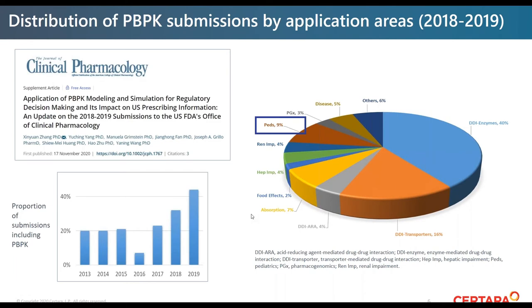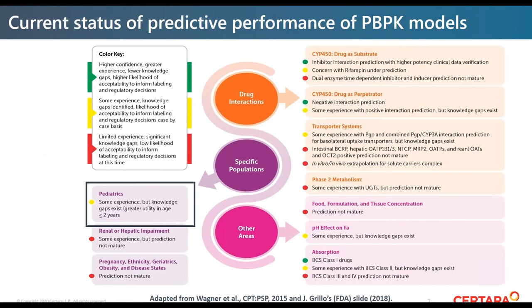Moving on to PBPK submissions specifically, a publication in the Journal of Clinical Pharmacology from the end of last year shows that the number of submissions including PBPK is increasing significantly every year. DDIs remain the focus for the majority, but pediatrics covers about 9% of PBPK cases. Because of the increasing total number of submissions, the number of pediatric cases is increasing year on year.